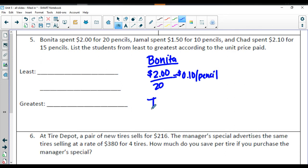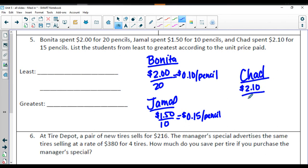We have Jamal, and he was $1.50 for 10 pencils, which is going to give me $0.15 per pencil. And we also have Chad, who is $2.10 for 15 pencils. So $2.10 divided by 15. He's going to be in at $0.14 per pencil.